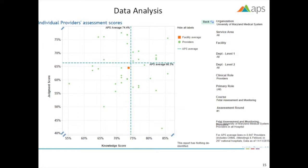This one is just an example of providers' assessment scores. In this case, the orange square is your facility, so all the providers in your facility. And then the green dots are each of the individual providers, how they scored.